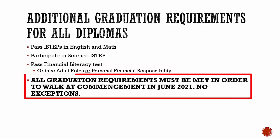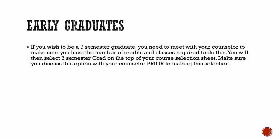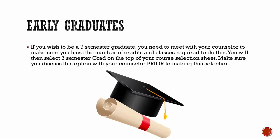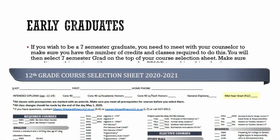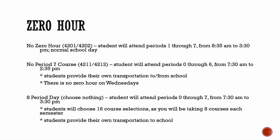All graduation requirements must be met and completed in order to walk at commencement in June of 2021 — there are no exceptions. If you wish to be a seven-semester graduate, you need to meet with your counselor to make sure you have the correct number of credits and classes required to do this. You will then select seven-semester grad on the top of your course selection sheet, and make sure you discuss this option with your counselor prior to making this selection.